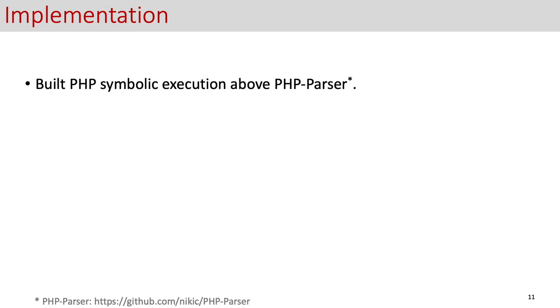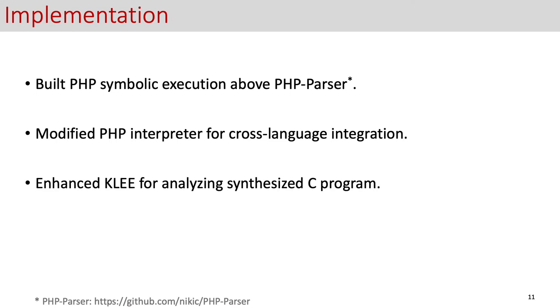As for our implementation, we implement our PHP symbolic execution above the PHP parser, and part of the cross-language integration part directly modify the PHP interpreter, and we also modify the Klee. Overall, we use 7k lines of PHP code, 2k lines of Python code, and 1.2k lines of C code.